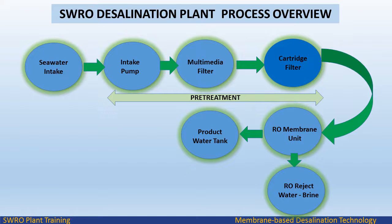Cartridge filters: In order to avoid fine particles or sand entering the membrane system, cartridge filters (duty plus spare) are supplied. The cartridges are of DOE spiral wound type with a nominal filtration rate of 5 micron. Cartridge filters are on duty with one number in standby. In case one filter is taken out of service for cartridge replacement or maintenance, the standby filter is put in operation.